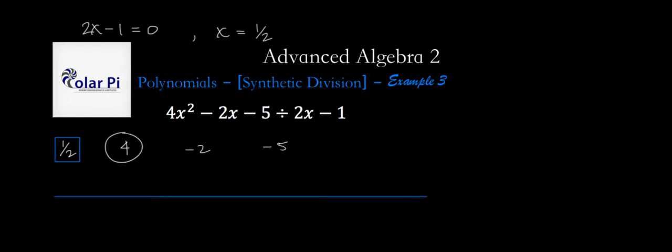And then we take this first number and write it below the horizontal line, so a 4 goes here. We drop that down, and then we multiply 4 to what's in the box, this 4 here, and 4 times a half is 2, so we get a 2 here, and we add down, and we get a 0. Then we take this 0, multiply to the half, we get a 0, and we add down, and we get a negative 5.